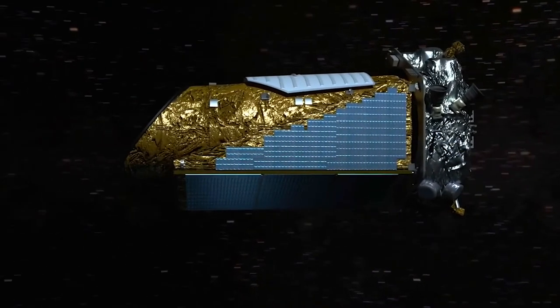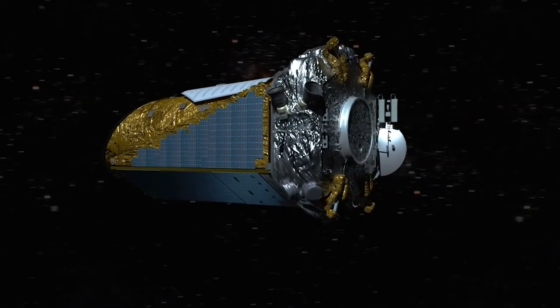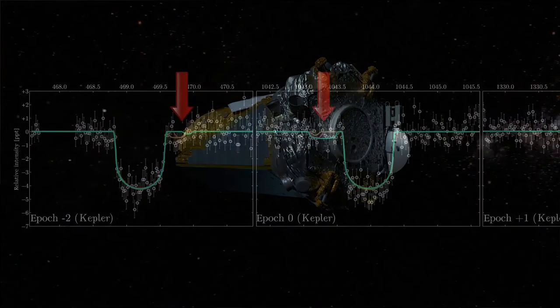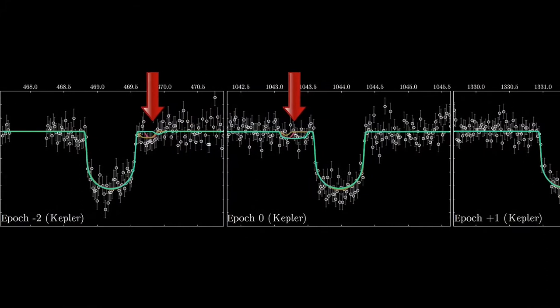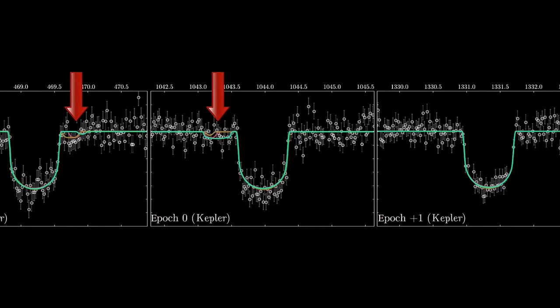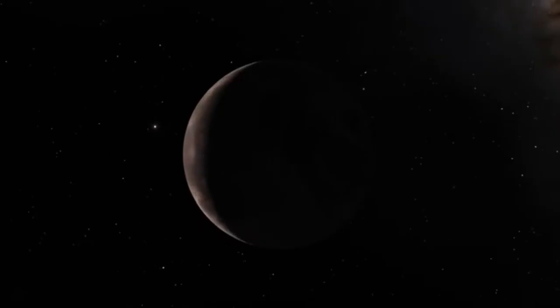Exomoons are exceptionally difficult to find. To see an exomoon we need to spot a transit within a transit. We need to see the characteristic dip in brightness caused by a planet crossing in front of the face of a star, and then we need everything to go right so that a moon is also visible from our point of view during the transit. And because moons are much smaller than planets, we need high sensitivity and very strong observations to confirm a detection.